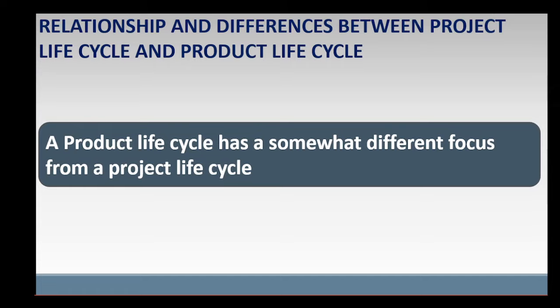A product life cycle has a somewhat different focus from a project life cycle. The focus of the project life cycle is to manage the project to create a unique deliverable, such as a product, to achieve desired outcomes or objectives. The focus of a product life cycle is to manage a product and develop strategies to make the product successful in the market. Some indicators of product success could be increasing sales, profit and market share, increased customer satisfaction, or prolonged life cycle.